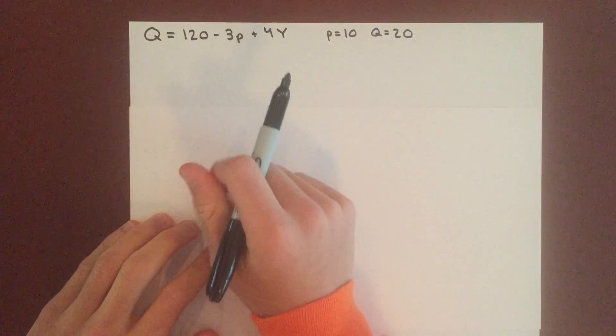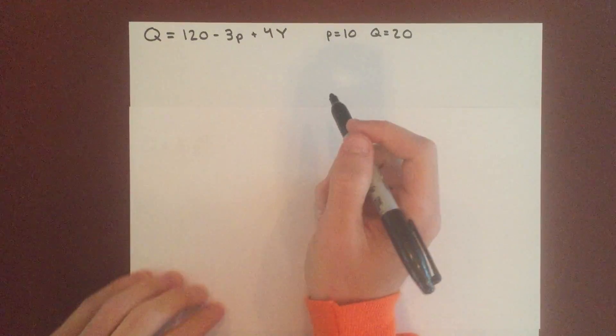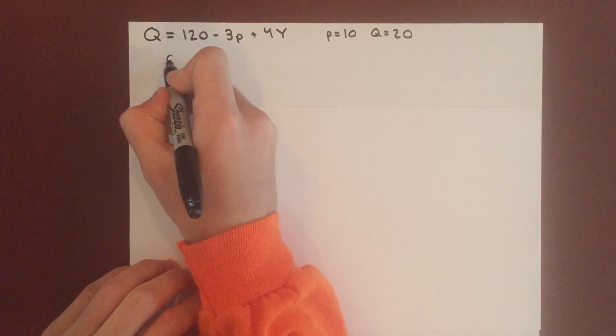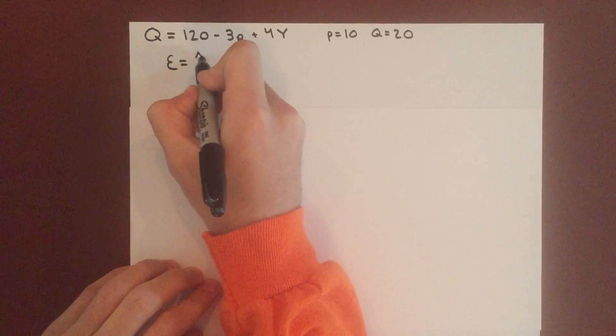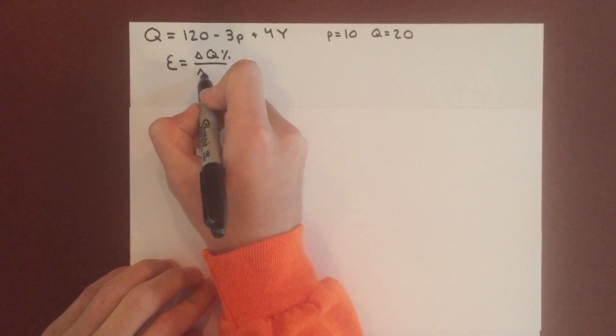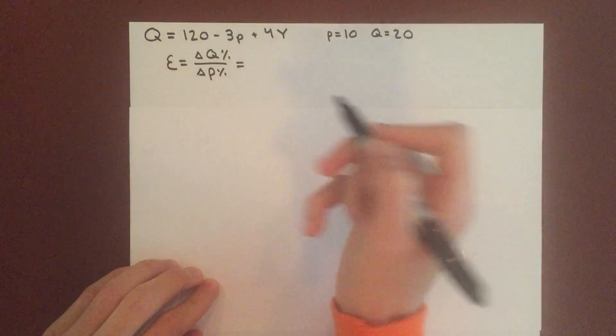haven't had a price and quantity that changed yet and we want to see how they will change. So in this case elasticity is still the percentage change in quantity over percentage change in price, but we can write it